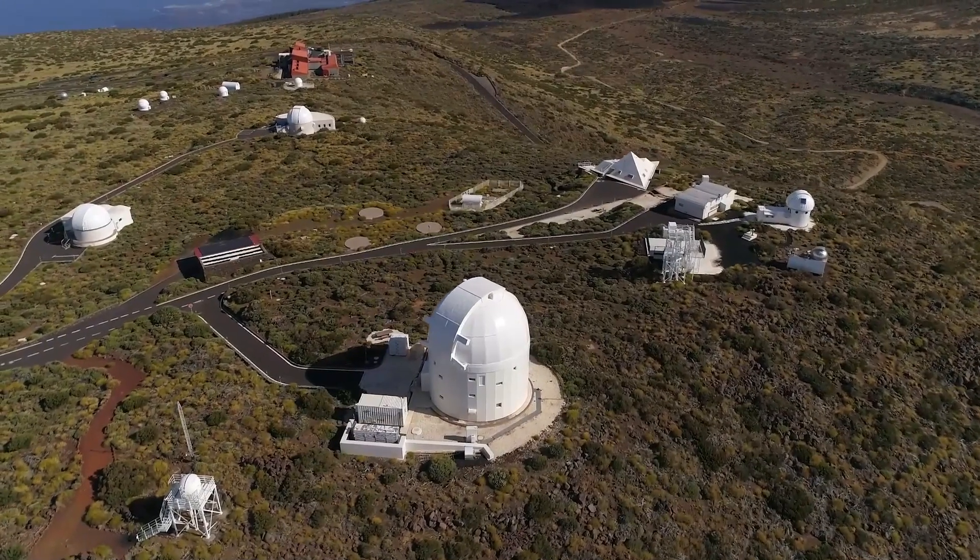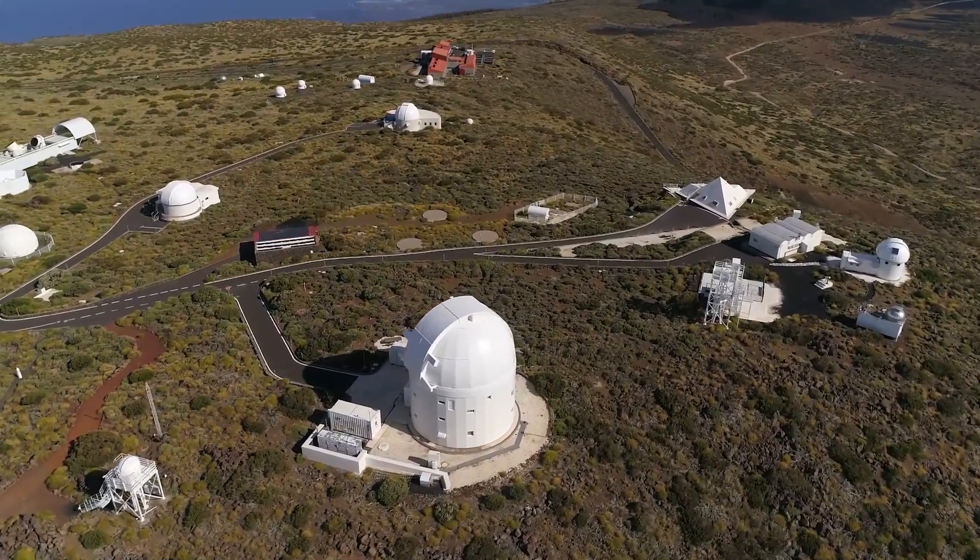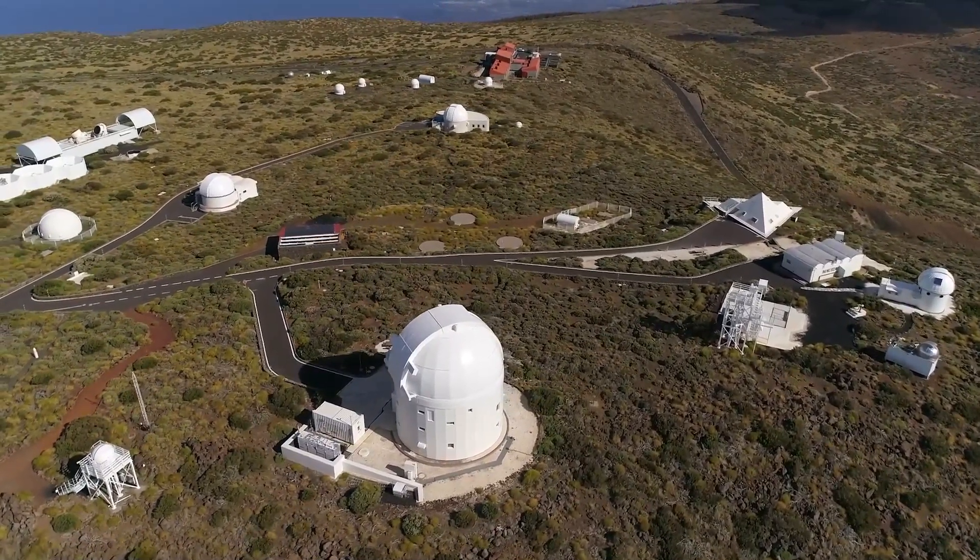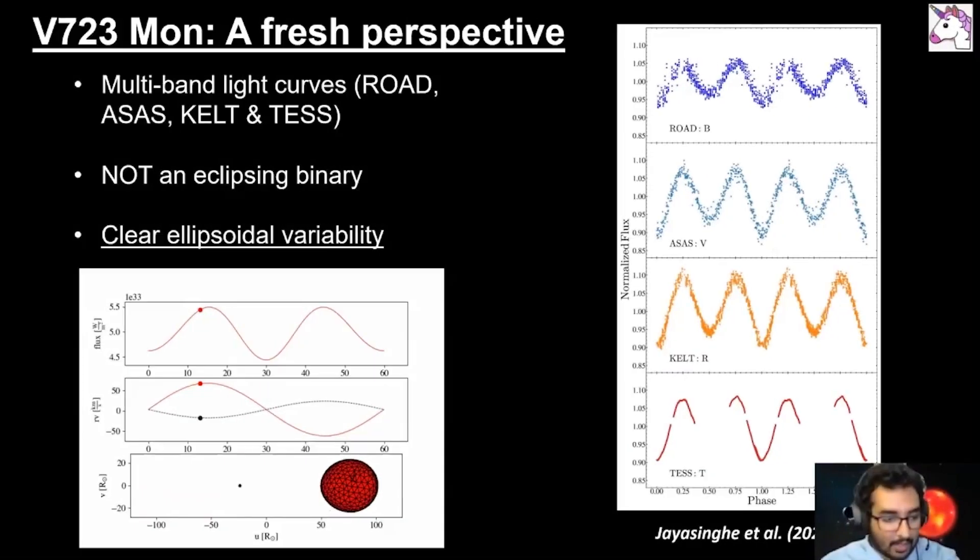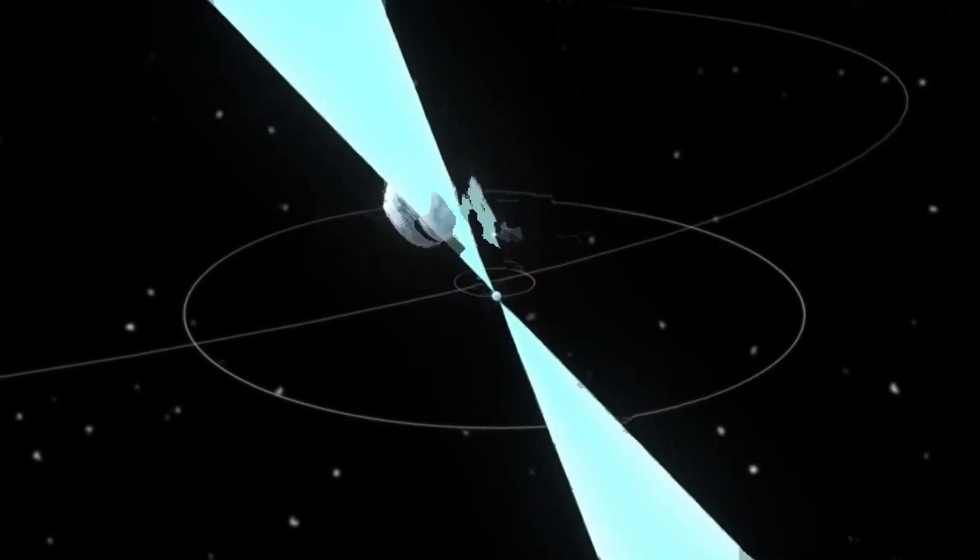Through their observations, the team deduced that an unseen companion object is actually tugging at the red giant, distorting it into a raindrop shape. If you look at this plot, you can see the star being distorted into a different shape, not a circle, and that creates a signal, like a sine curve again. And the team believes that the companion is most likely a small black hole because the data given shows a combined mass of both objects.